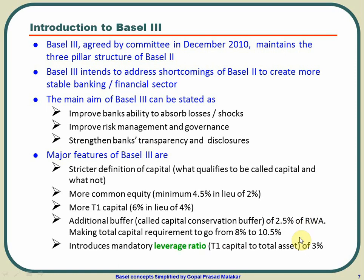BASEL 3 introduced a mandatory leverage ratio — Tier 1 capital to total assets — of 3%. This means if you are putting 3 million dollars as Tier 1 capital, your total assets should not go beyond 100 million dollars. This limits the bank's freedom to keep adding assets with regard to capital, addressing how far a bank can go for a given amount of capital.